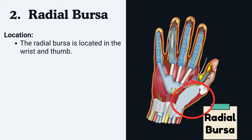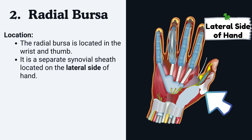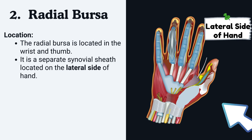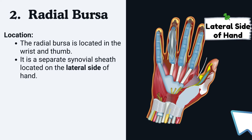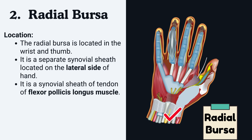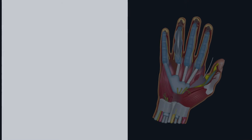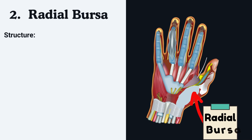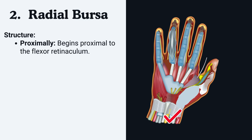Number two: Radial bursa. Location — the radial bursa is located in the wrist and thumb. It is a separate synovial sheath located on the lateral side of the hand. It is the synovial sheath of the tendon of flexor pollicis longus muscle.